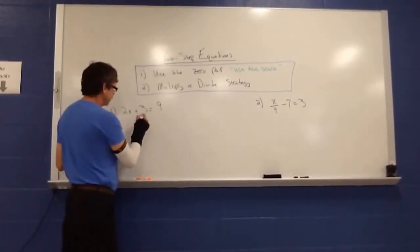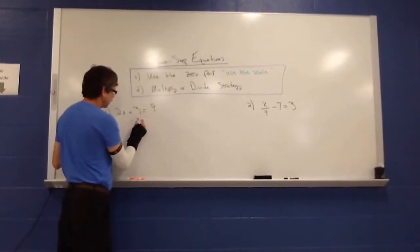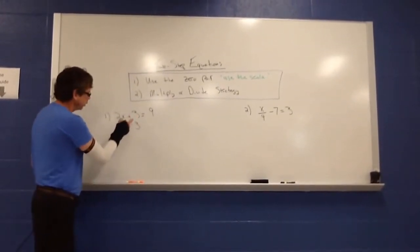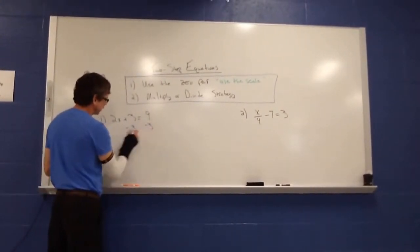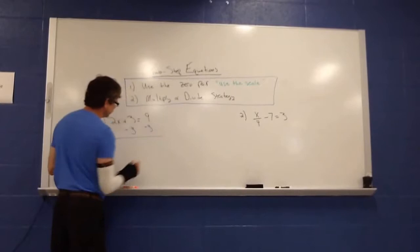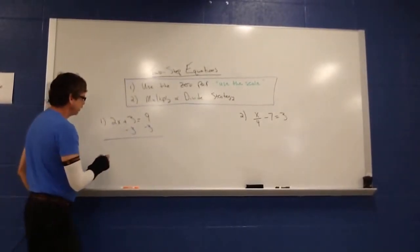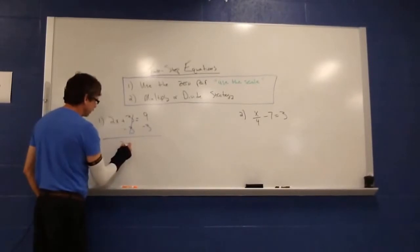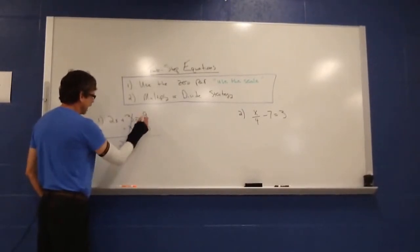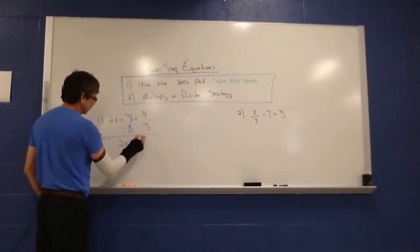So to get rid of a positive 3, we can use the negative 3 to make that disappear. But to keep it balanced, we have to use its zero pair to keep it going. So then we have the zero pair will zero out.